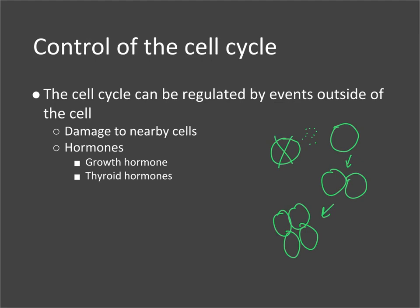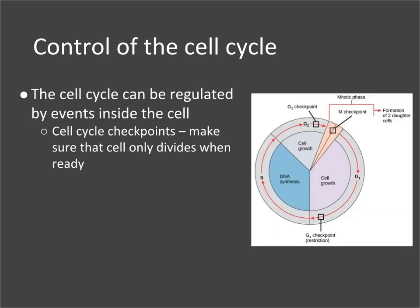Hormones also play a role. Growth hormone triggers cells in your body to replicate so you can grow as a child, and thyroid hormone is involved as well. There are also factors inside the cell that help determine whether the cell will continue through the cell cycle.